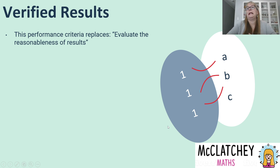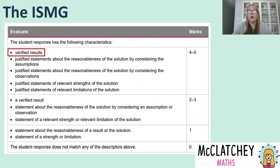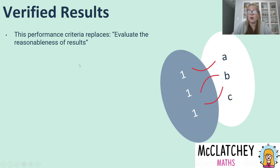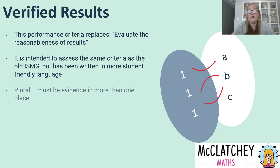This replaces what was in our last syllabus where we talked about evaluating the reasonableness of results — that was part of a whole wordy descriptor evaluating the reasonableness of the results, the observations, and evaluating the reasonableness of the assumptions. Now this evaluation of reasonableness has been broken out from one single dot point into two other dot points, but this one up here is also part of that original dot point. It's evaluating the reasonableness of results, just put into student friendly language.